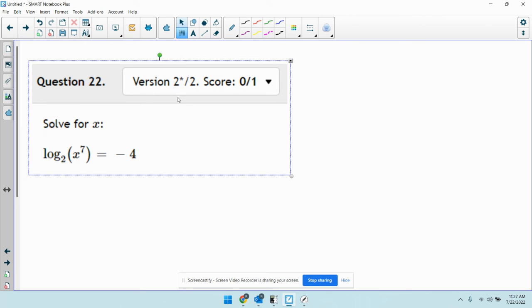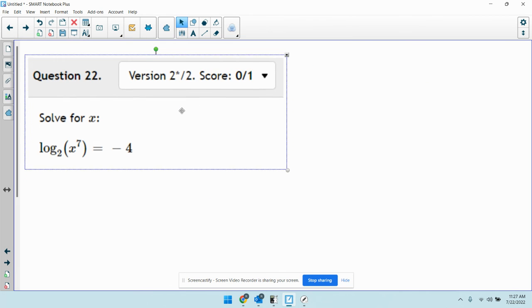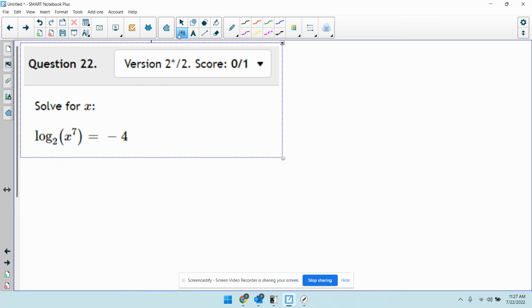And the last one, using the formula again, it's already, the log is already isolated so I can convert. So I'm going to get x to the 7th, comes out to its own side, equals 2 to the power of negative 4.